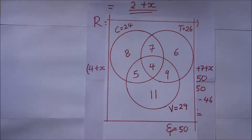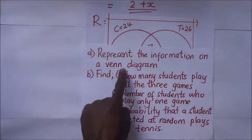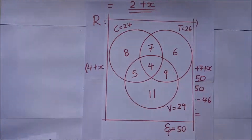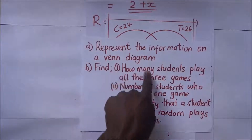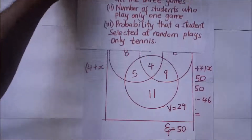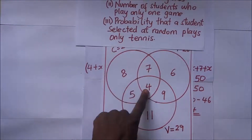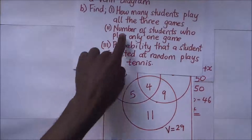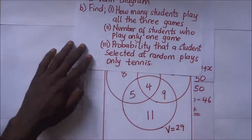We've completed part one — representing the information on a Venn diagram. For part two, we find how many students play all three games. Those students are in the centre of the Venn diagram, which is x = 4. So 4 students play all three games.